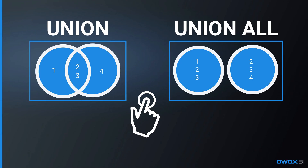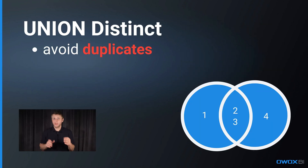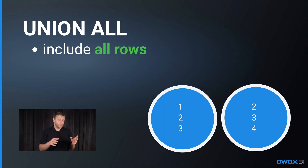If you know you are going to use Union, ask yourself whether you want to include duplicate rows in your results or not. Use Union Distinct to avoid duplicates — for example, combining a list of unique customers from multiple sources. Or use Union All to include all rows from the queries no matter if they are unique or not — suitable when you need a full historical record that includes every entry, such as consolidating log entries from multiple systems where each entry includes duplicates. Each Union type serves specific data consolidation needs, enhancing SQL query flexibility and efficiency.